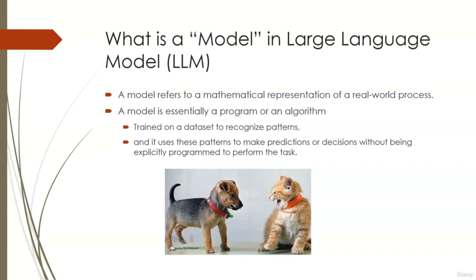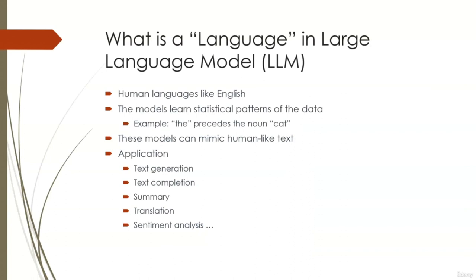In the context of Large Language Models, 'language' refers to human languages like English, French, Spanish, etc. These models are trained on vast amounts of text data in one or more languages to learn the statistical patterns of language. For example, in English the word 'the' often precedes a noun. By learning these patterns across billions of sentences, the model can generate text that follows the same patterns and therefore looks like natural human language.